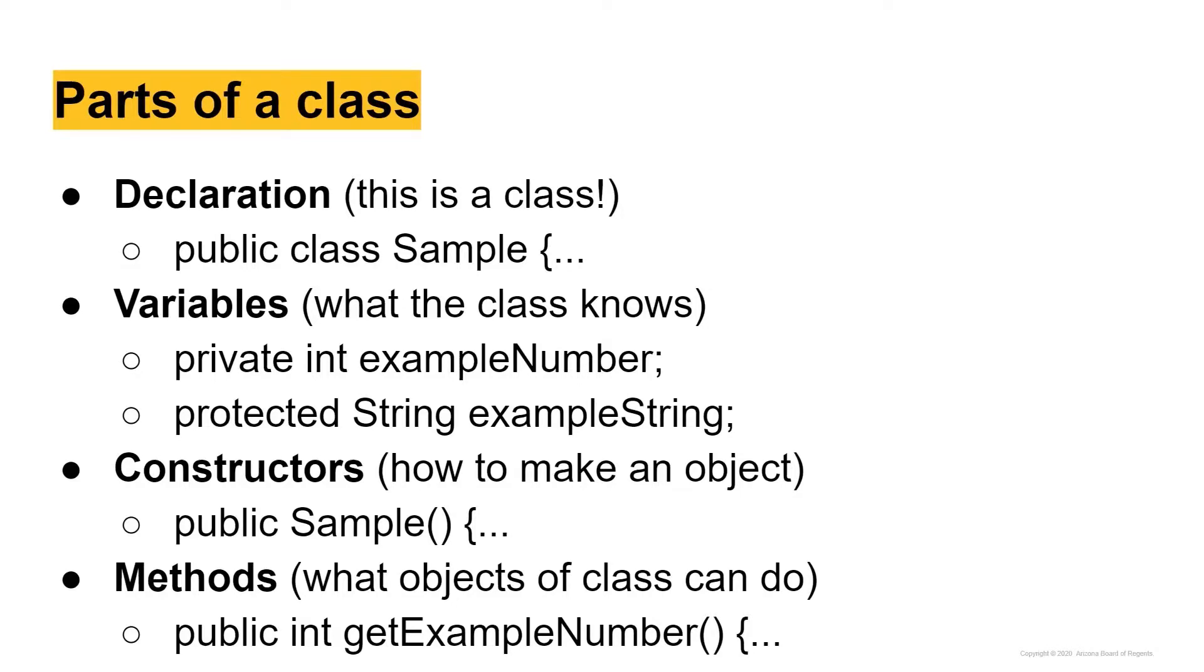And these are declared similarly to methods in any other class that you've seen, you're going to have the access indicator, and then the return type of the method. And this example is an int because the sample method is returning some example number. So it's going to be returning an integer.